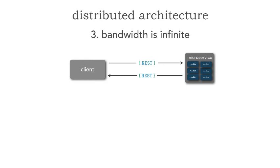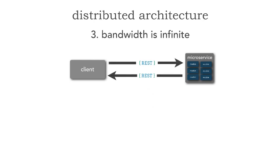Number three is one of my favorites: bandwidth is infinite. As we start breaking apart our applications, we realize we've got plenty of bandwidth and the network is pretty fast. But as we start leveraging the network on these inter-service calls — dozens to hundreds of inter-service calls between services — we realize we're passing a lot of data. We don't think about that data we're passing, and sure enough, we start slowing down the network because bandwidth is not, in fact, infinite.